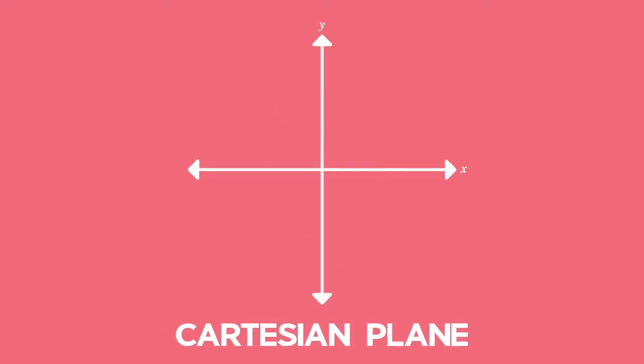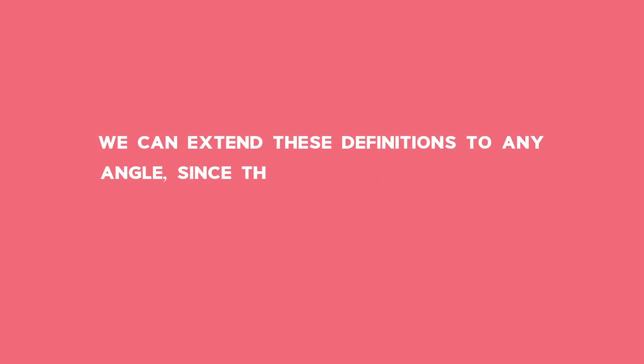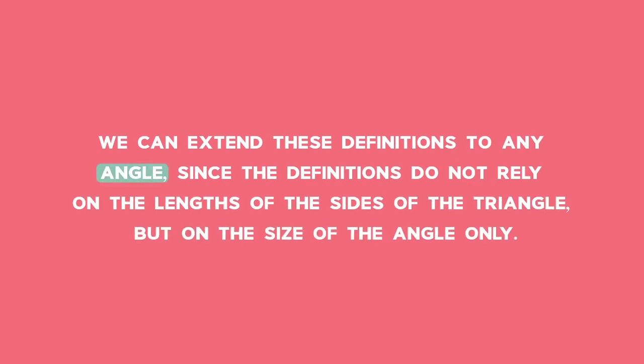Trigonometric ratios can be defined using right-angled triangles. However, we can also define trigonometric ratios on the Cartesian plane. We can extend these definitions to any angle, since the definitions do not rely on the lengths of the sides of the triangle.